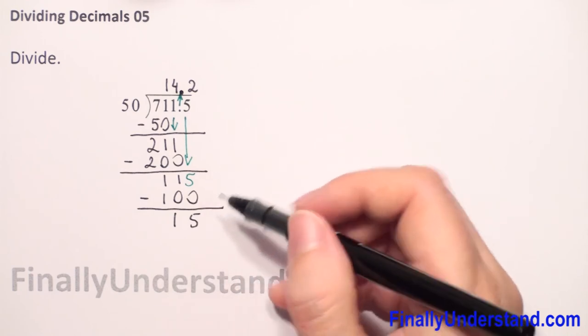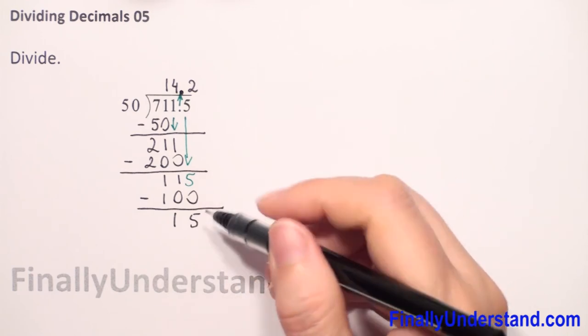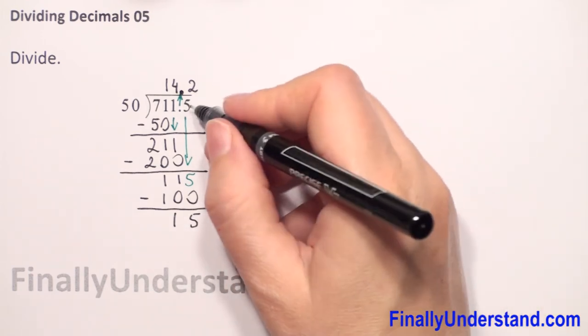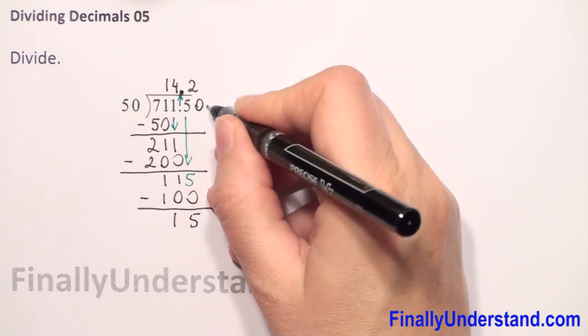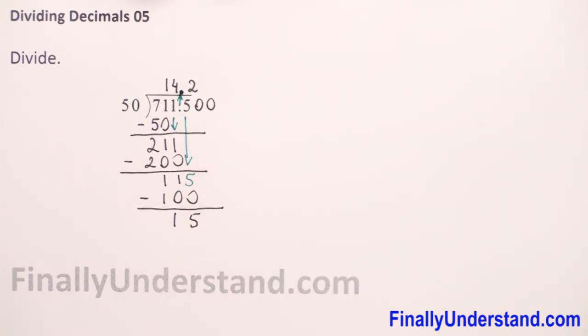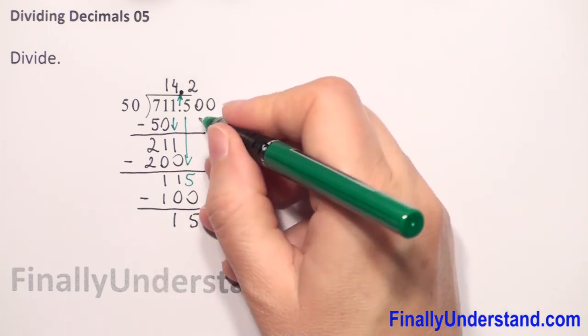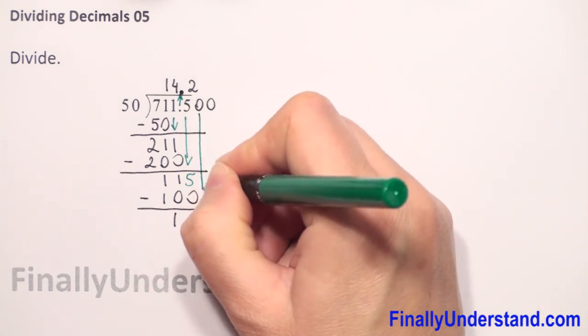Because we don't finish division, we can always add extra zeros after 5. Let's put two zeros first. And what else? We take down the next digit, so we take the next zero down. So we have 150 divided by 50, which is 3.